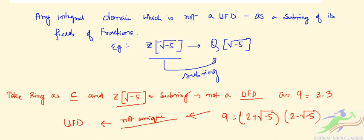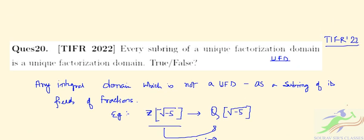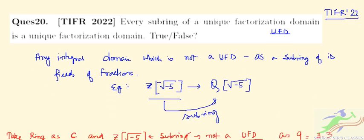So for question number 20, the statement is actually false — every subring of a unique factorization domain is a unique factorization domain is not true in all cases. So the correct answer will be false.